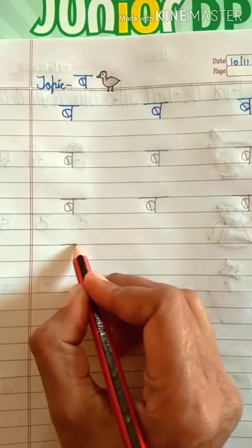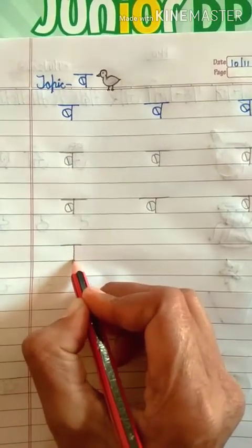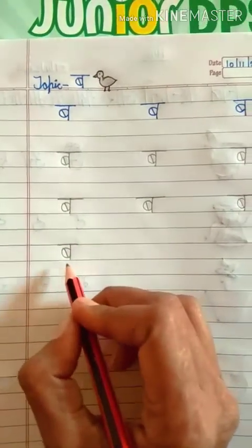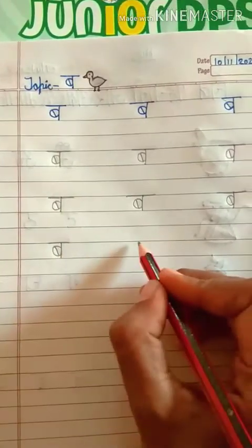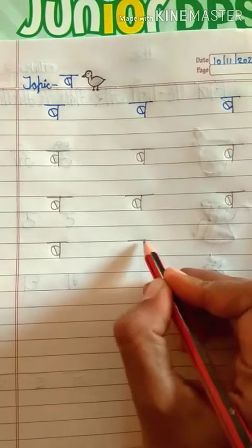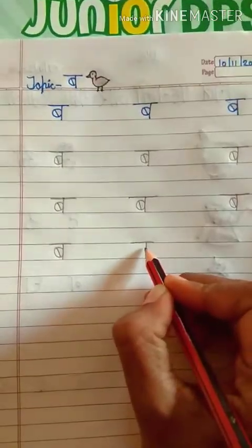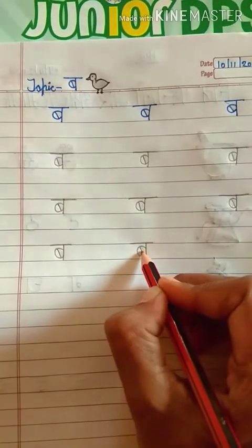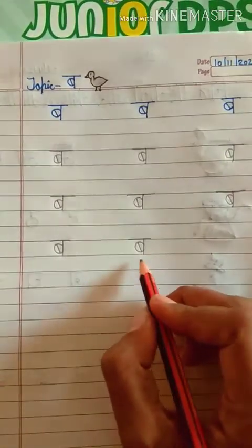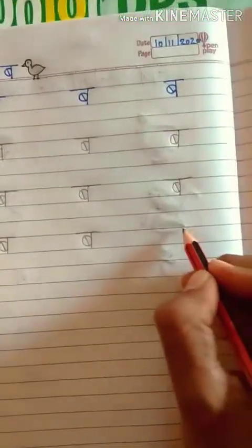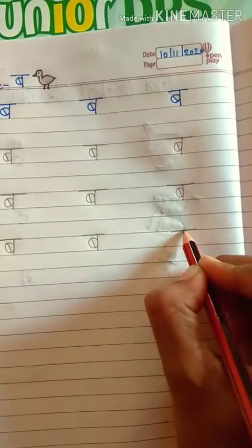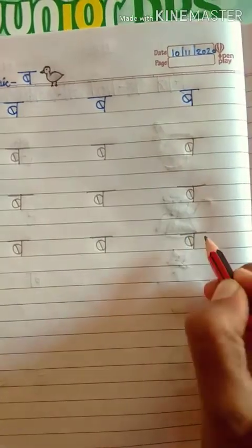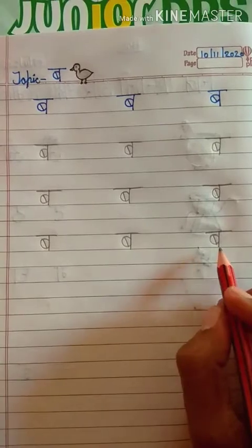Repeat again. Now draw sleeping line upside. Then draw standing line. Then draw left curve. Then draw slanting line. Which letter is this? This is Letter Ba. Kaunsa akchar hai yeh? Ba akchar hai. Repeat again. Now draw sleeping line upside. Then draw standing line. Then draw left curve. Then draw slanting line. Which letter is this? This is Letter Ba. Kaunsa akchar hai yeh? Ba akchar hai.